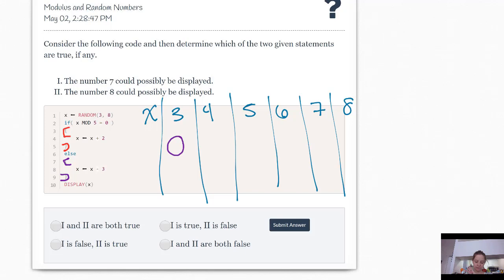Now let's try for 4. So is 4 mod 5 equal to 0? 4 divided by 5, does it have a remainder of 0? No, it has a remainder of 4. So we'll do what's in purple. And purple says then take X and set that to X minus 3. So if X was 4, 4 minus 3 is 1, and that was what would display.